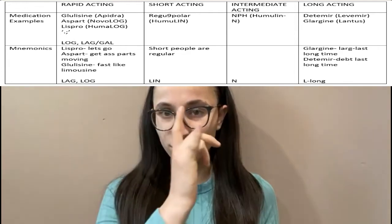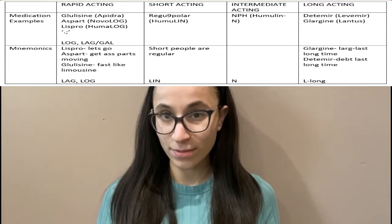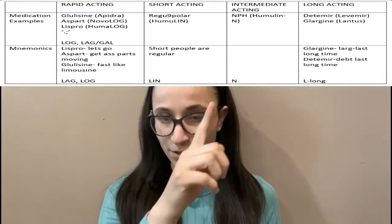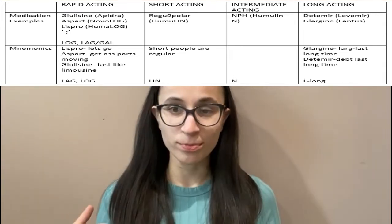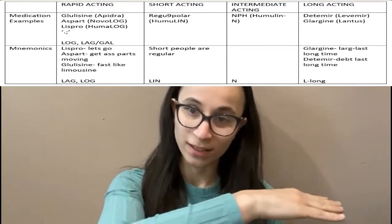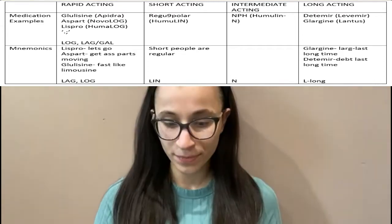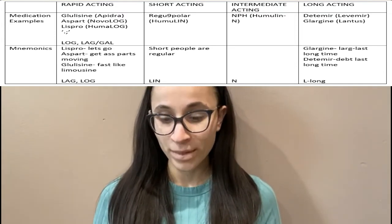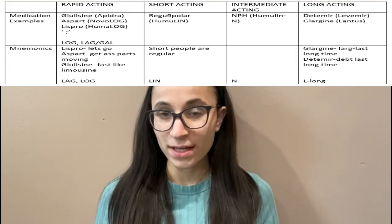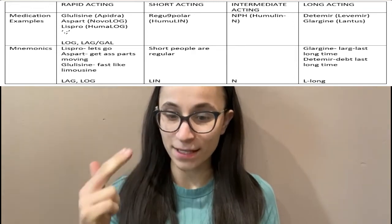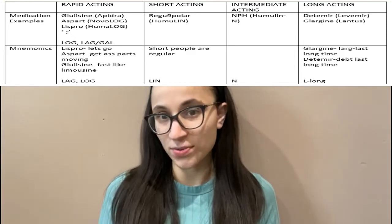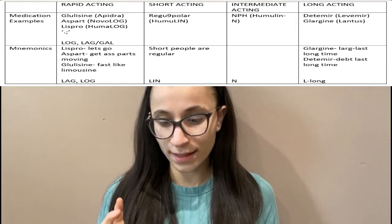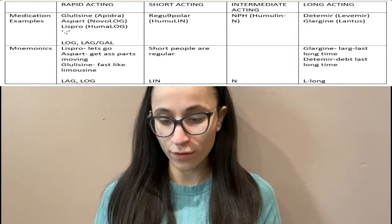One more thing: for rapid acting insulins, the brand names all end in '-log' — just imagine being on a log going really fast. For short acting, the brand name ends in '-lin.' For intermediate acting, NPH starts with N and the brand name Humulin also ends in N.